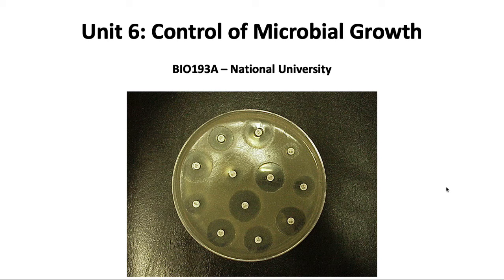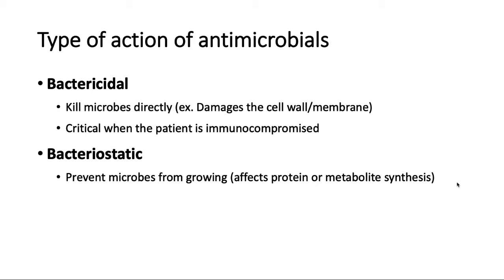Welcome to unit 6 of the BIO 193A course called 'Control of Microbial Growth.' We are going to look at antimicrobial effect and also how to measure or quantitate this antimicrobial — and particularly antibacterial — effect. Whenever we look at how these antimicrobials or specifically antibacterials act, we can look at two kinds of actions: bactericidal and bacteriostatic.